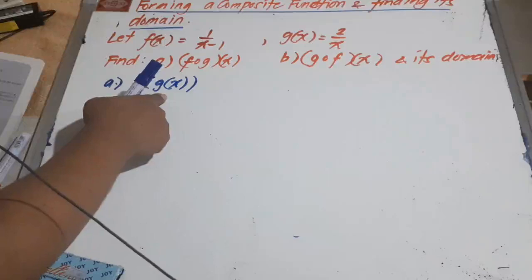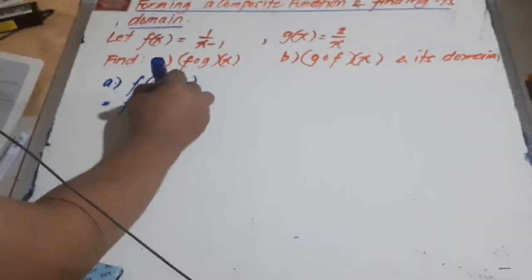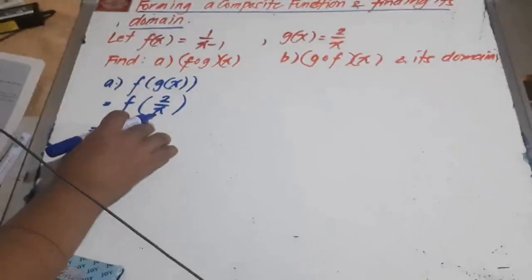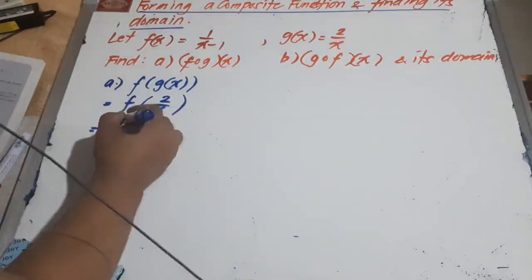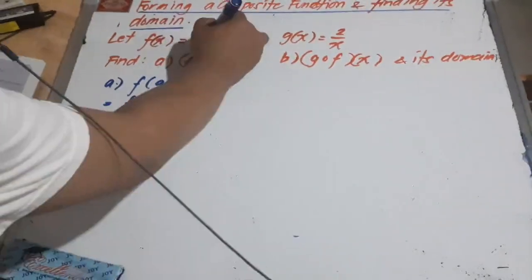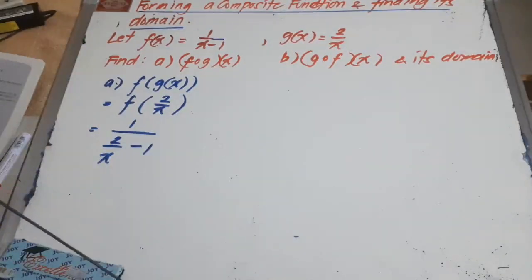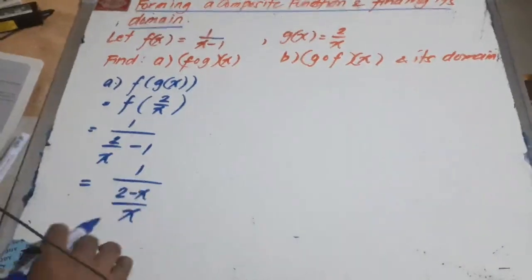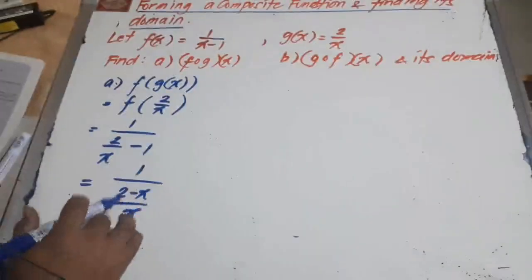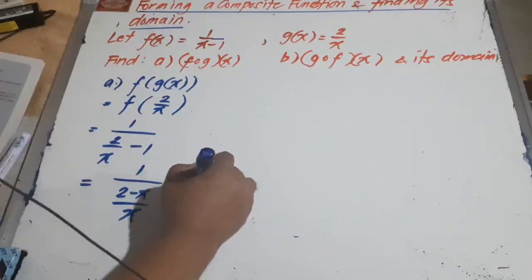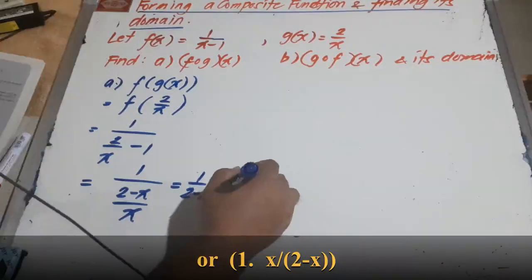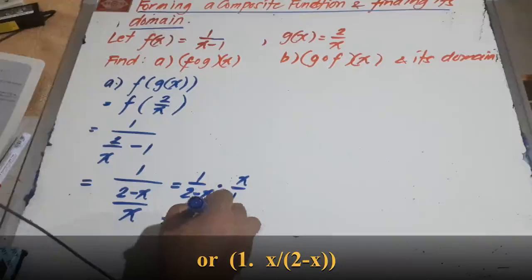First, we plug in g of x. G of x is 2 over x, so we write f of 2 over x. We substitute 2 over x in place of x in our f of x function. So we have 1 over the quantity 2 over x minus 1. Getting the LCD, that gives 1 over the quantity 2 minus x over x. Getting the reciprocal of the denominator, x goes on top and 2 minus x goes to the denominator. So our answer is x over 2 minus x.